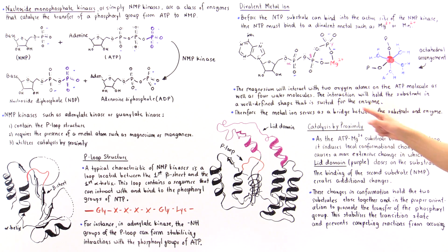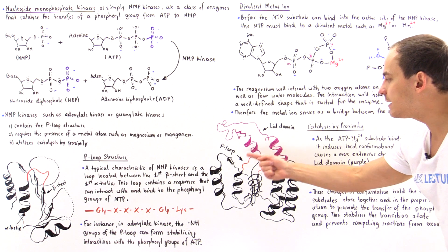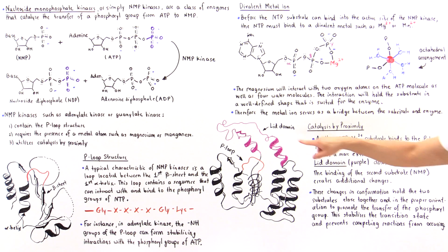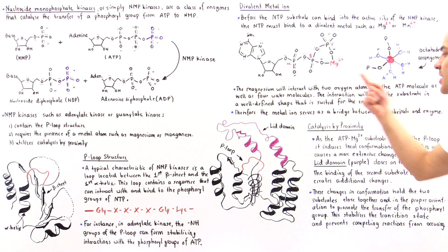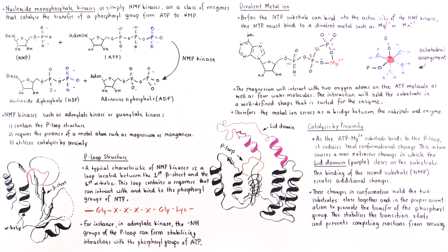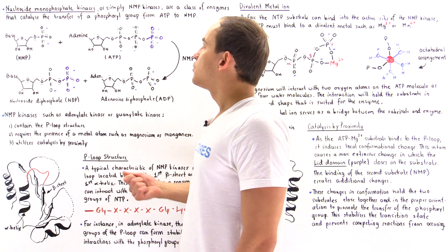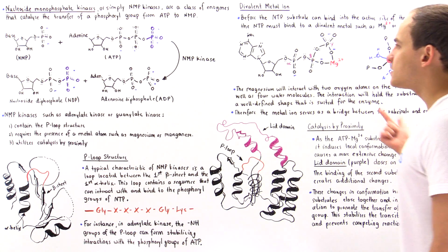So as the ATP–magnesium substrate binds to the P-loop, it induces a local conformational change that causes a more extensive change, causing the lid domain to close. The binding of the second substrate — the NMP — into the active site creates additional changes and catalysis by proximity. These conformational changes hold the two substrates in close proximity with the proper orientation, promoting phosphoryl group transfer. This decreases the energy of the transition state, lowers the activation energy barrier, and prevents any competing reactions. NMP kinases thus utilize both metal ion catalysis and catalysis by proximity and orientation.